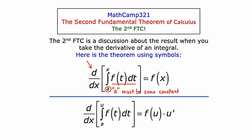The other condition that must be met is that the upper limit must be some expression containing x. If those two conditions are met, all you're going to do when you take the derivative of this integral is take that expression on top and substitute it in for every occurrence of t. So the result is that you end up getting f of x. You started with f of t, but you end up getting f of x. It's that simple.